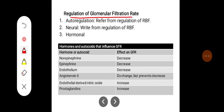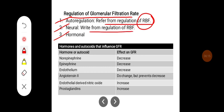Regulation of GFR is mainly achieved through autoregulation, neural mechanisms, and hormonal mechanisms. In autoregulation, GFR is regulated in a manner similar to renal blood flow. Neural regulation involves sympathetic and parasympathetic input, but neural regulation does not have as significant a role in regulating GFR as it does for renal blood flow.